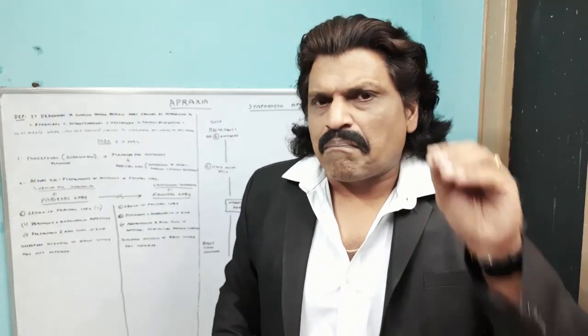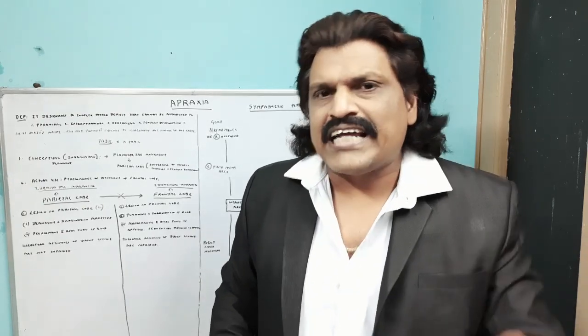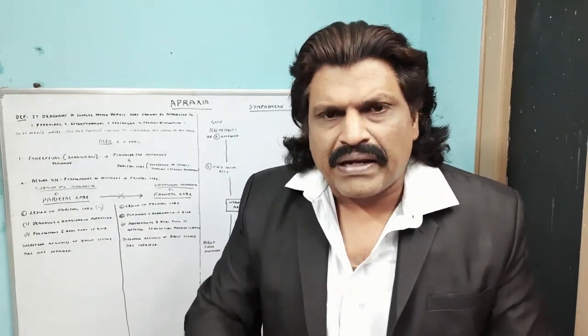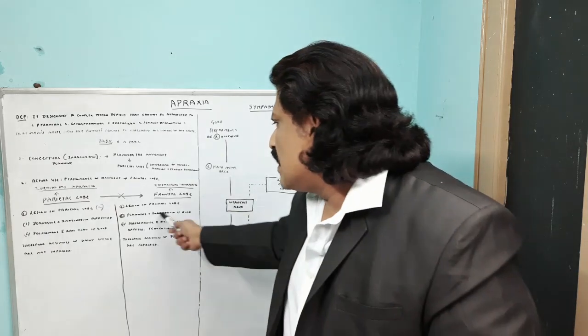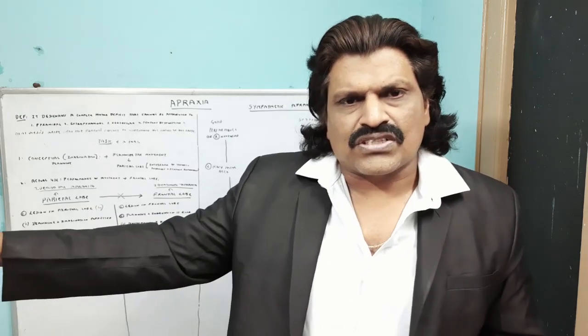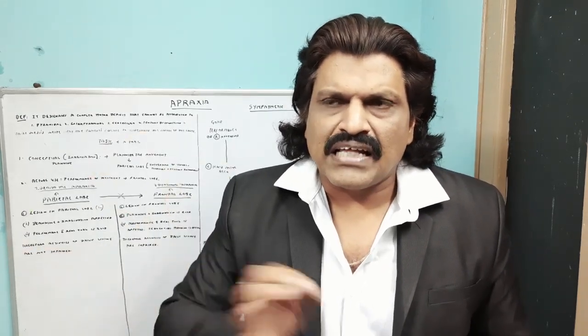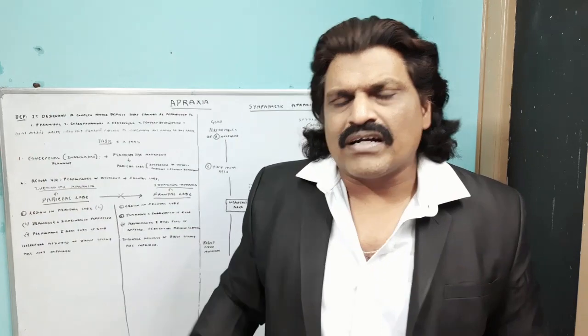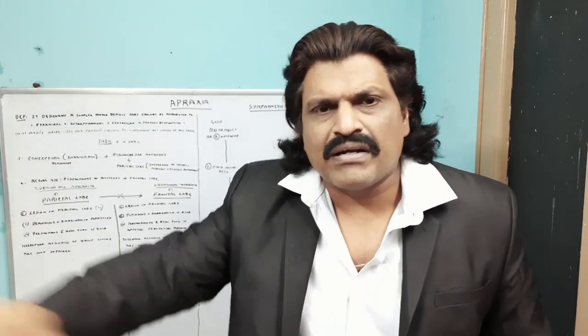Here, since the parietal lobe is intact, planning and imagination are intact. If you ask them how to comb the hair without the actual comb, they can do it, or ask him to write as if he has a pen — he can. But performance with the real tool is affected because the parieto-frontal connections are affected. With the actual tool, he is not able to perform the act. The goal-directed activity or the sequence is lost. The imagination is intact because the parietal lobe is intact, but since the parieto-frontal connections are gone, the real performance with the real-life object is affected — the sequence is broken up.